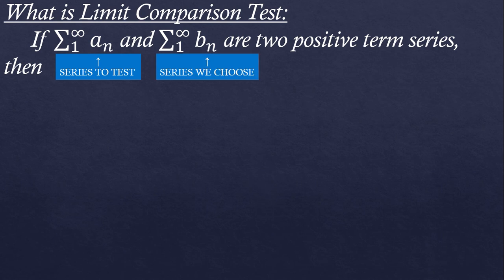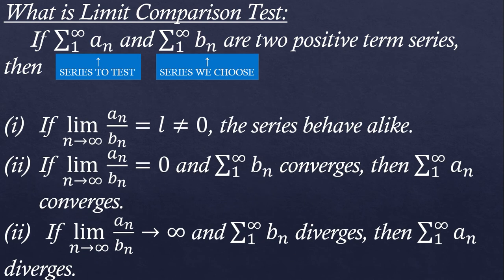After that, you can use these three results. First result: if the ratio of a_n divided by b_n is equal to a positive integer l, any positive integer l, then a_n behaves the exact same way as b_n does.